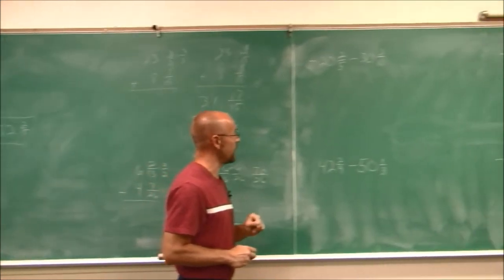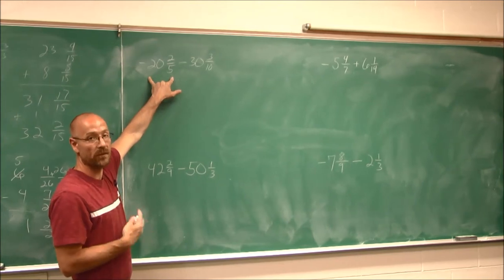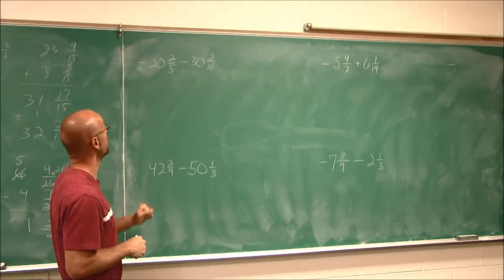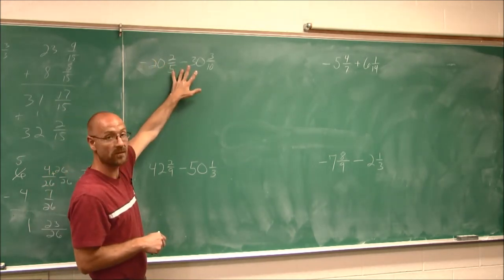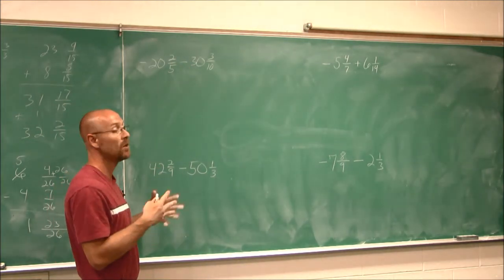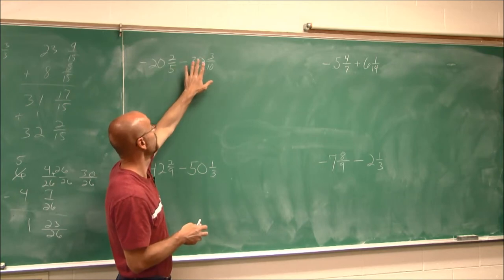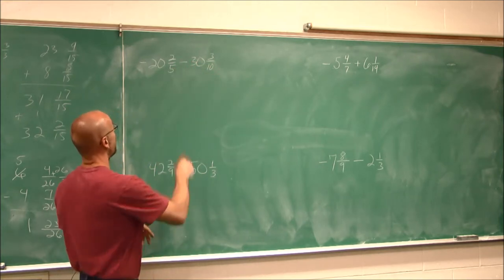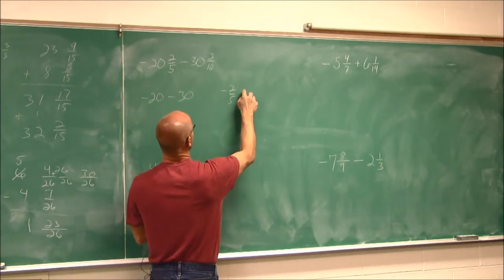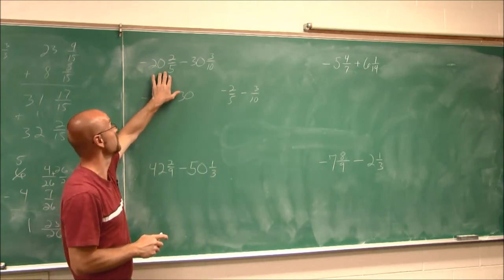We're going to do two more examples. We have to be careful of signs — we're dealing with integers, and even if they're mixed numbers, they're still integers we can find on our number line. If they have the same sign, it makes our life easier — we just combine them. So I have negative 20 and 2/5, negative 30 and 3/10. I combine those: negative 20, negative 30, negative 2/5, negative 3/10. That sign belongs to both pieces of each mixed number.